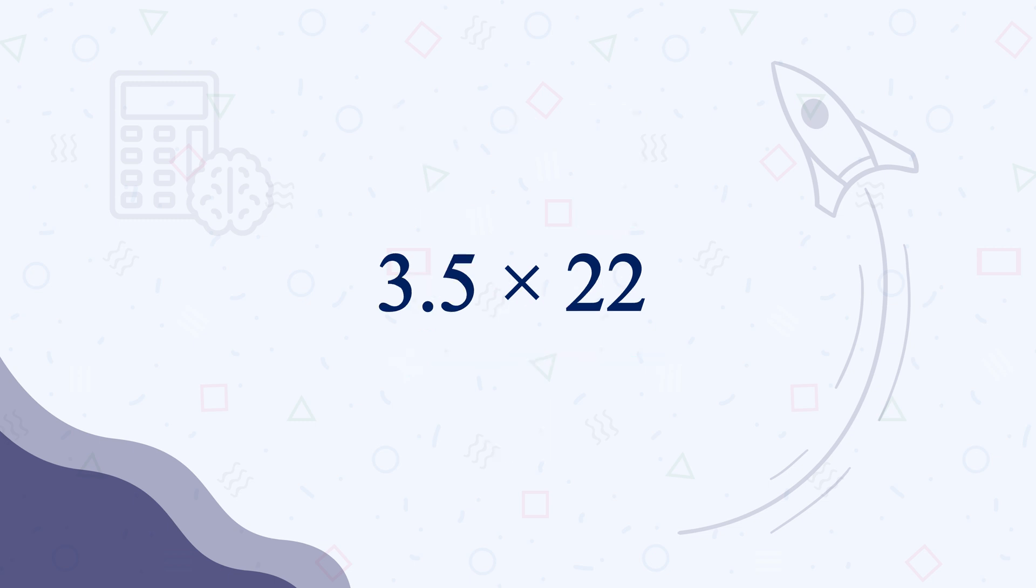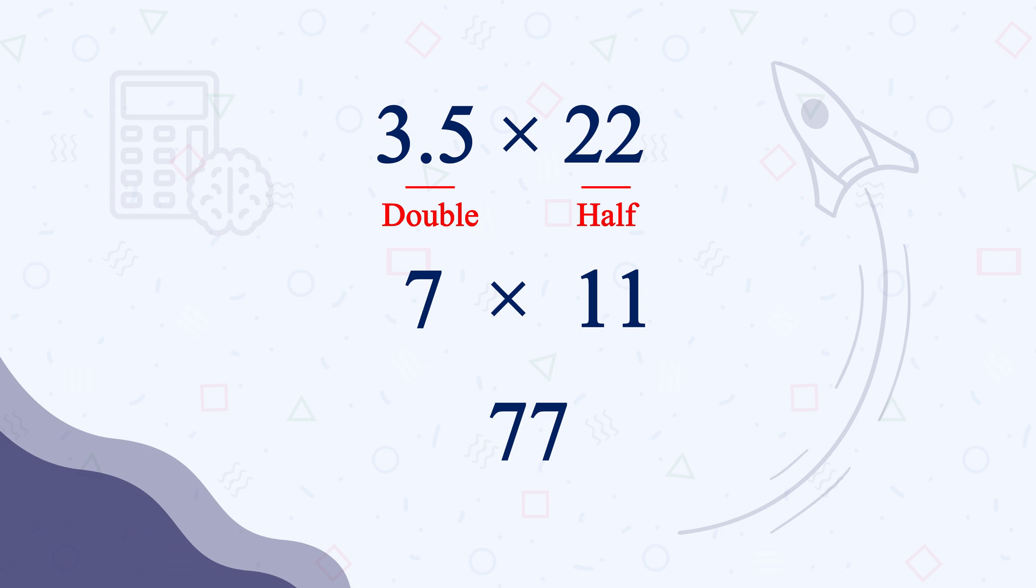Now 3.5 times 22. Can you do it? Take 3 seconds and try it. Double of 3.5 is 7, and 7 times 11 is 77. See, lightning fast! 11 was the half of 22, so we got 77 as the product of 3.5 times 22.